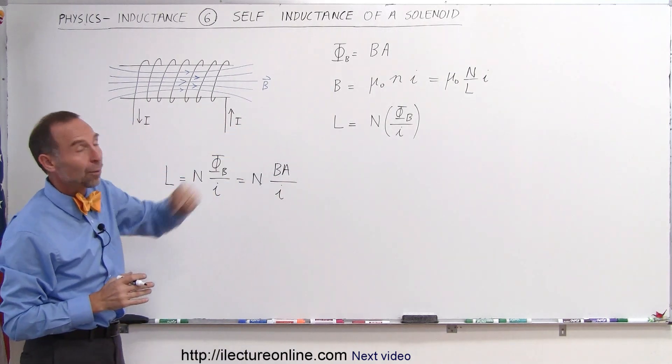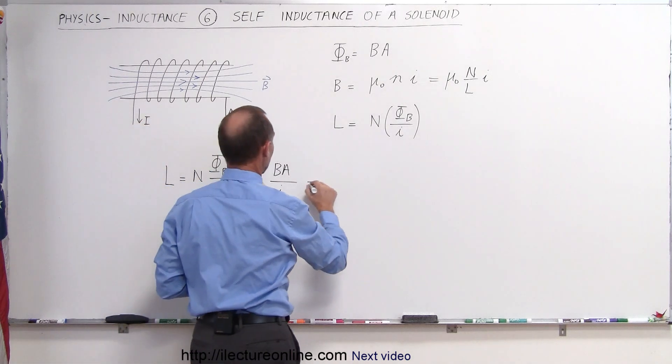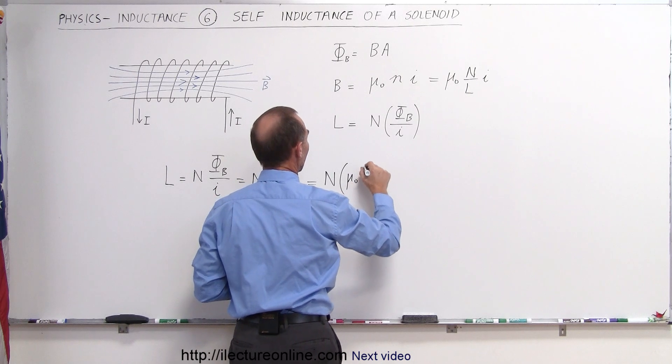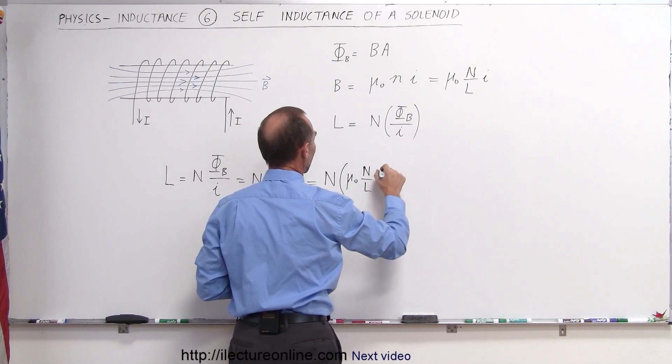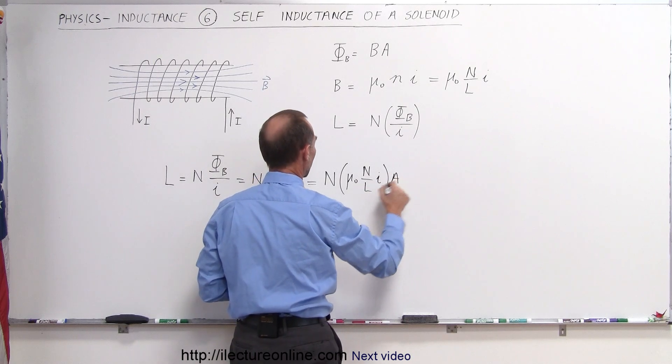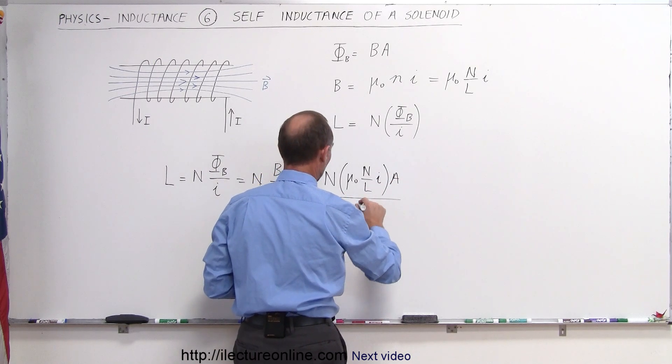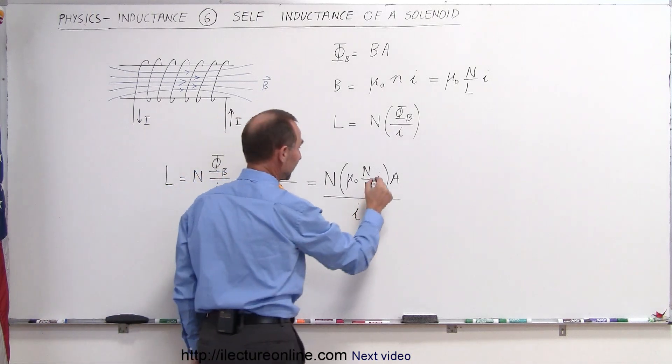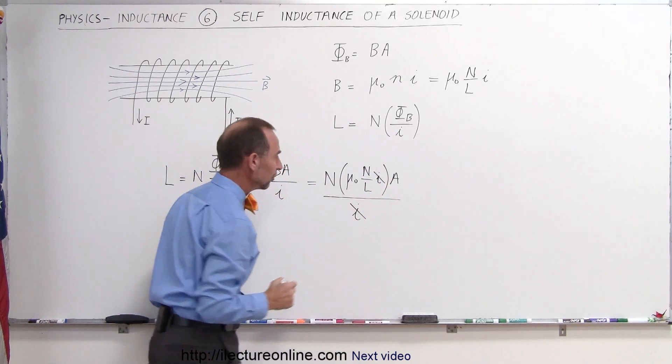B can then be defined by what we have over there, so this is equal to N times B. B is going to be mu sub-naught times N divided by L times I, so that would be B, the magnetic field, times the cross-sectional area divided by the current. Notice in this case the current cancels out, so the self-inductance of a solenoid does not depend on the current.